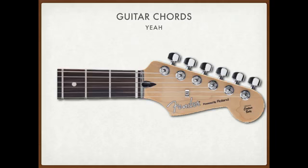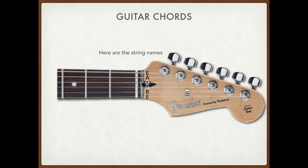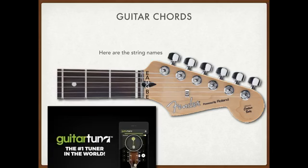Guitar chords. I'm getting really good at this PowerPoint thing — I've definitely upped my game. So instead of a little graph I put together, I used Google and found a picture of a guitar neck. Here are the string names: E, A, D, G, B, and E. If you like to tune your guitar, I suggest getting a guitar tuner or go to Guitar Tuna, a guitar app that makes it really easy to tune whatever instrument you like — bass, guitar, or ukulele.